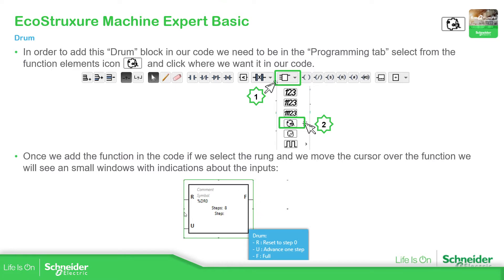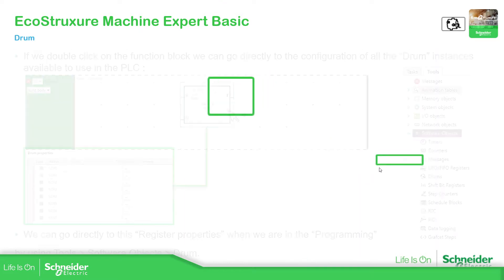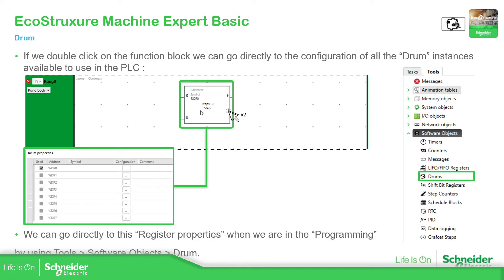You can see there are only two inputs and one output. The input R is for reset, U is for advancing one step — just like an increment — and F is to indicate that all steps have completed. To access the full configuration, double-click to open the drum properties, where you can see all drums available. Another way is via Programming Tools > Software Objects > Drums.